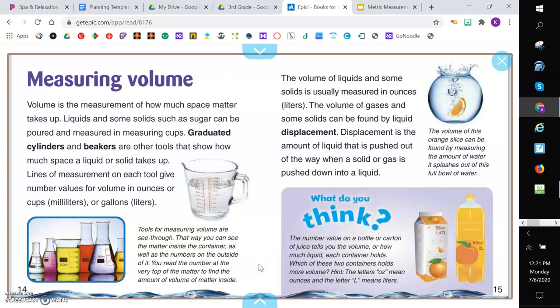Measuring volume. Volume is the measurement of how much space matter takes up. Liquids and solids, such as sugar, can be poured and measured in measuring cups. Graduated cylinders and beakers are other tools that show how much space a liquid or solid takes up. Lines of measurement on each tool give number values for volume in ounces or cups, or milliliters, or gallons, meters. The volume of liquids and some solids is usually measured in ounces.